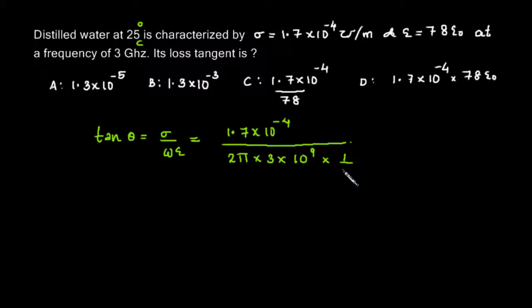We have frequency given as 3 gigahertz, so frequency in radians will be 2 pi into 3 into 10 power 9. Epsilon is 1 by 36 pi. Epsilon is 7.8 epsilon not, so it will be 7.8 into 1 by 36 pi into 10 power minus 9.